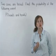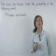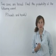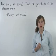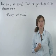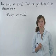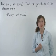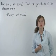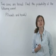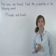Tossing two coins are independent events, because the outcome of tossing one coin does not affect the outcome of tossing the other coin. We find the probability of independent events by multiplying the probability of the first event times the probability of the second event.